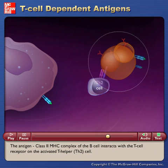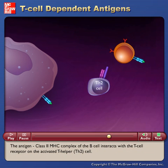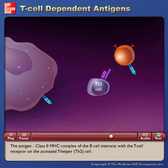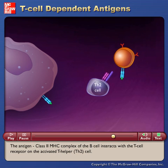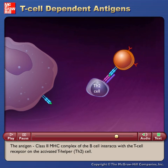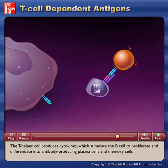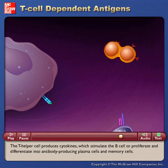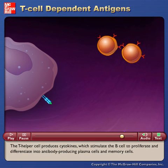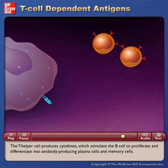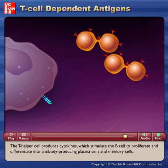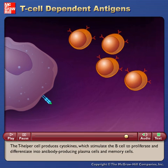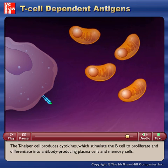The antigen class 2 MHC complex of the B cell interacts with the T cell receptor on the activated T helper Th2 cell. The T helper cell produces cytokines which stimulate the B cell to proliferate and differentiate into antibody-producing plasma cells and memory cells.